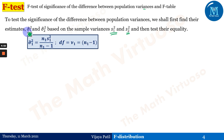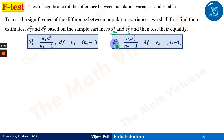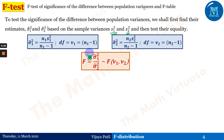The estimator μ̂₁² equals n₁s₁²/(n₁ − 1), with degrees of freedom ν₁ = n₁ − 1. Similarly, μ̂₂² equals n₂s₂²/(n₂ − 1), with degrees of freedom ν₂ = n₂ − 1. The F-statistic is defined as μ̂₁²/μ̂₂², which follows the F-distribution with parameters (n₁ − 1, n₂ − 1).